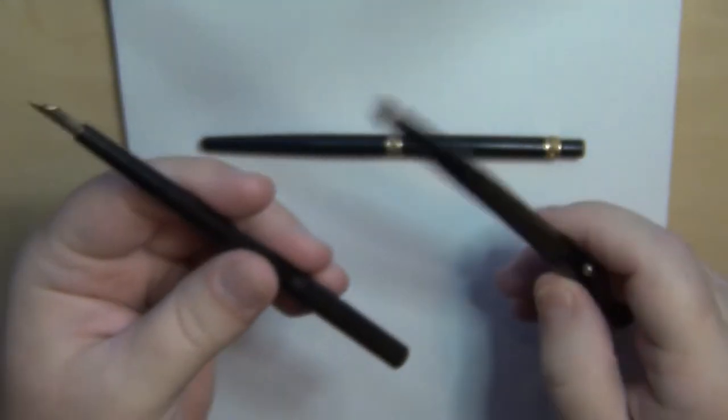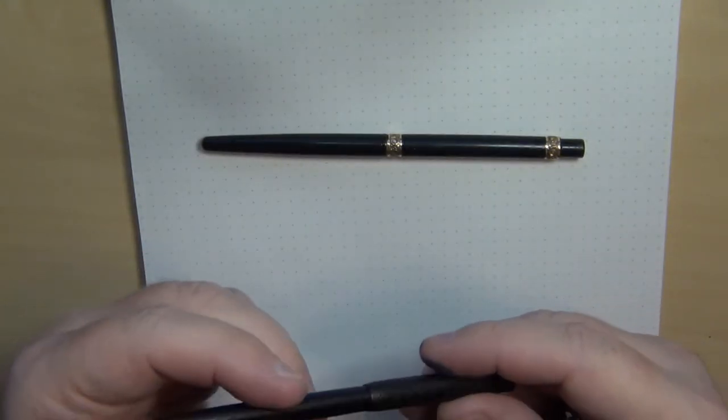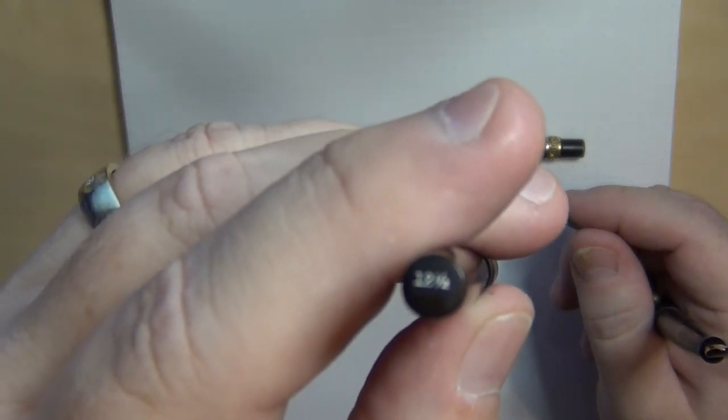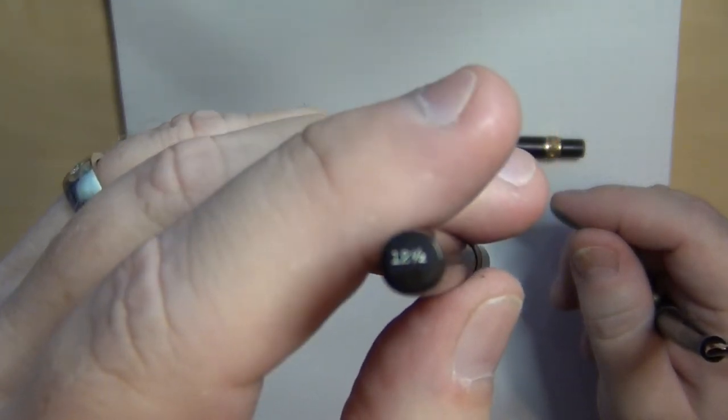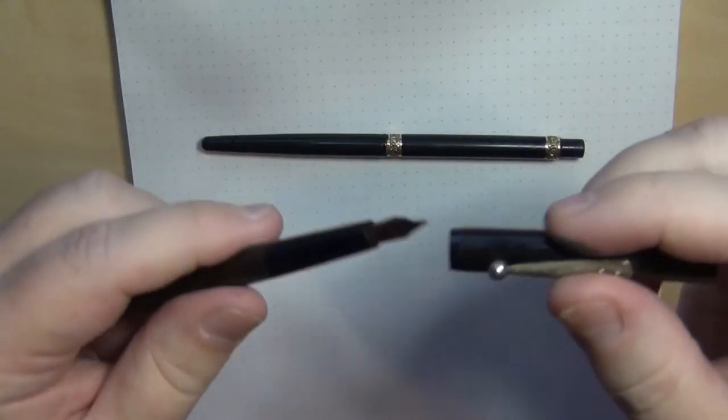So anyway, this is the size differential. Let me go ahead and take that off. Like I said, it's an eyedropper filler. So you would essentially just unscrew this and drop the ink that you want down into that tube, and you would put it back and write with it. So I'll give you an example of the difference in the size between these two in both length and girth. Looking at the nib, you essentially have number two nibs on them.